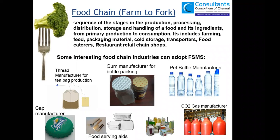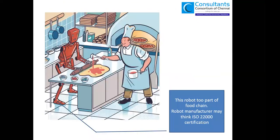Some industry examples of those who can go for ISO 22000: a thread manufacturer for tea bag production, a gum manufacturer for bottle packing, a PET bottle manufacturer, a CO2 gas manufacturer, all kinds of packaging materials, all kinds of food serving aids such as spoons, and cap manufacturers — all can go for ISO 22000. We need to understand that ISO 22000 covers the entire food chain.